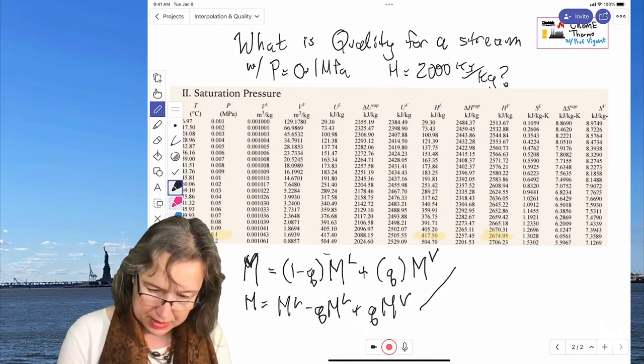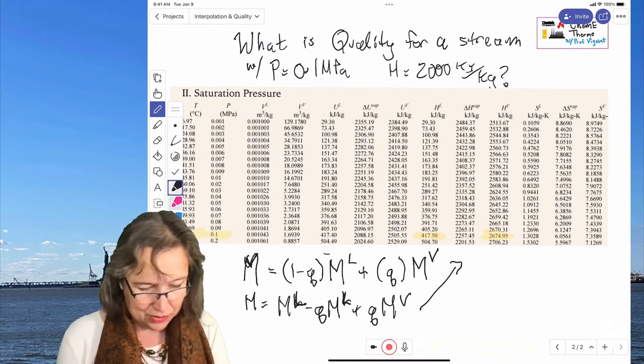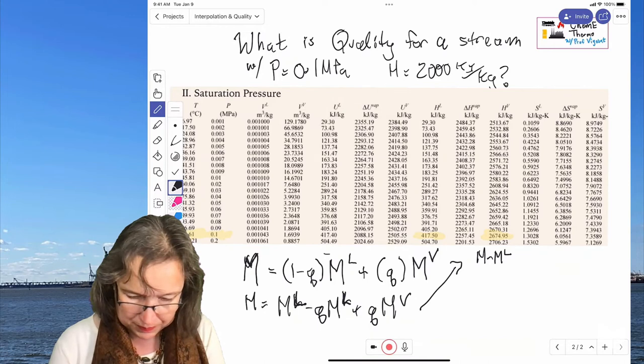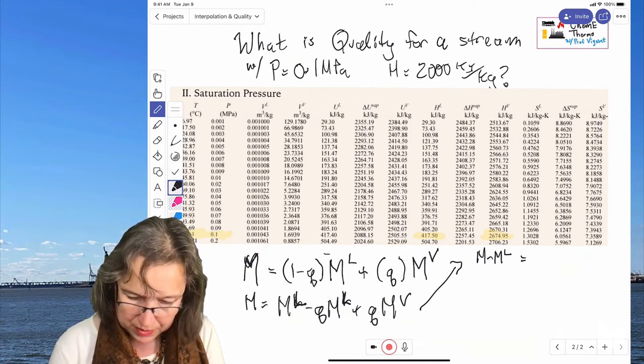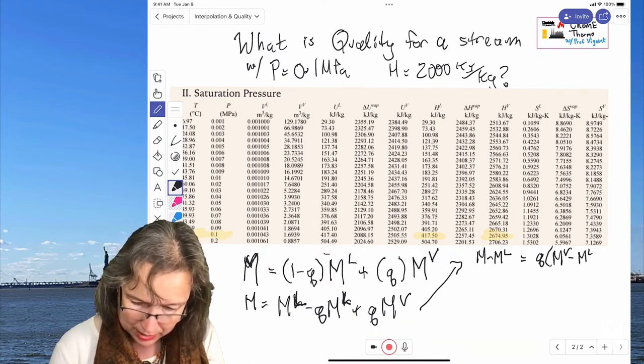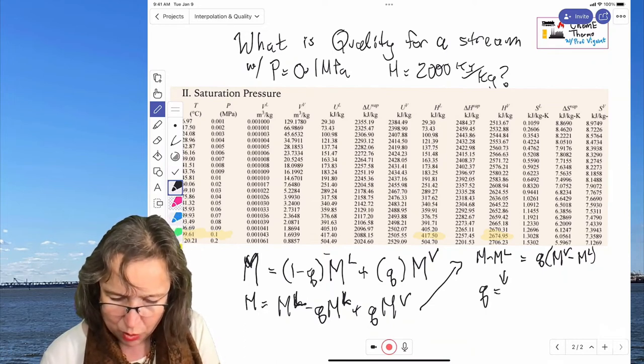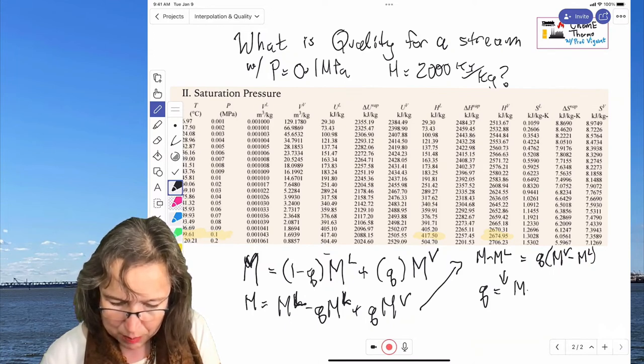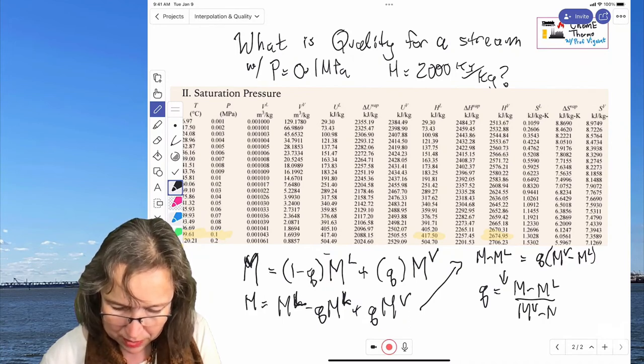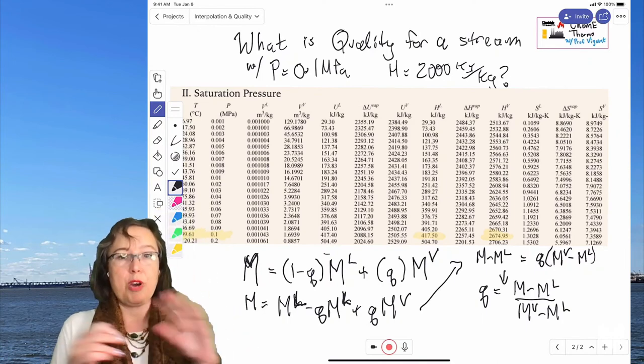That's just distributing. And we got to make sure my L's look different than my V's. So then we get M minus ML equals Q times MV minus ML. And so in a feat of spectacular algebra, I get quality equals M minus ML over MV minus ML. So there you go. Those are our two useful ways of working with quality.